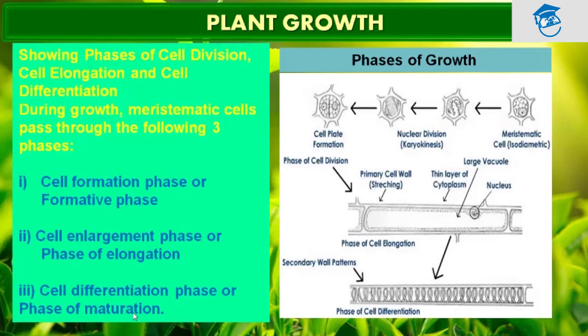In the phase of maturation, the cell has no power of division. The meristematic cell is isodiametric — meaning it has the same diameter. It gives rise to new cells and nuclear division takes place, which we call karyokinesis — karyo means nucleus and kinesis means breakdown — followed by cell plate formation.